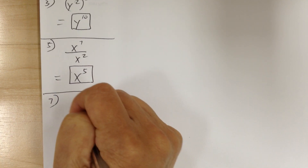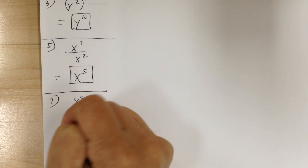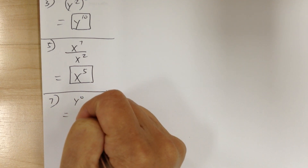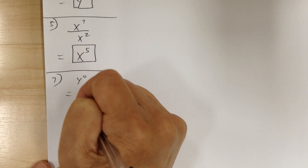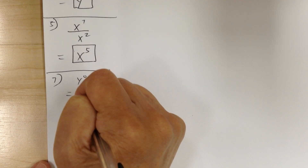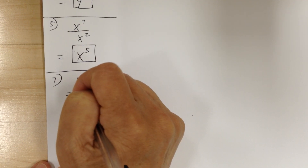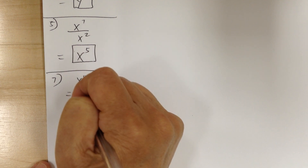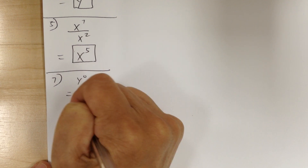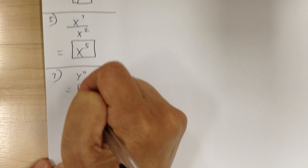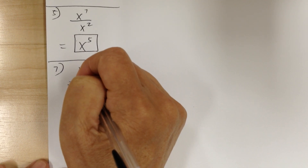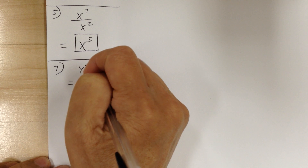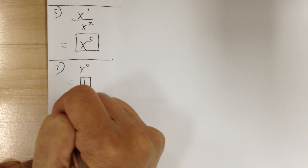Number 7, you got y to the 0. So anything to the 0 power is equal to 1, unless the base is 0. So if the base is anything other than 0, then to the 0 power is 1.